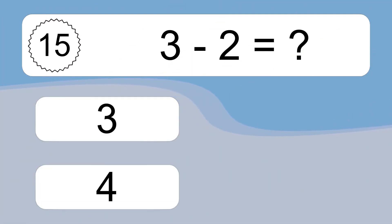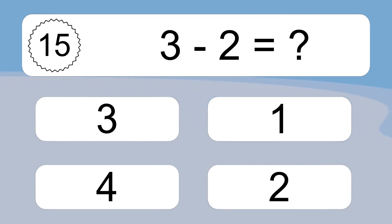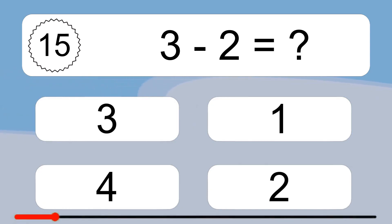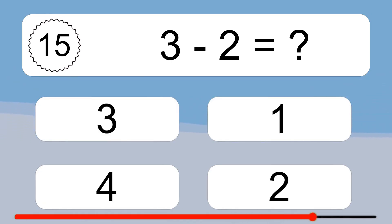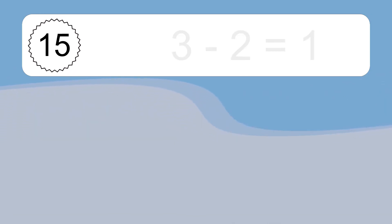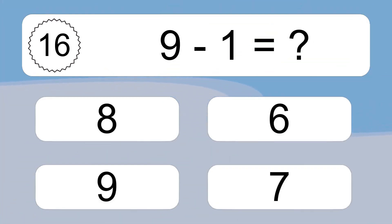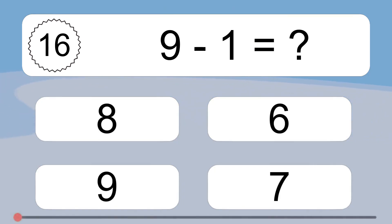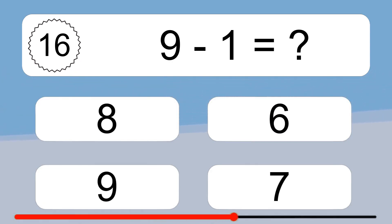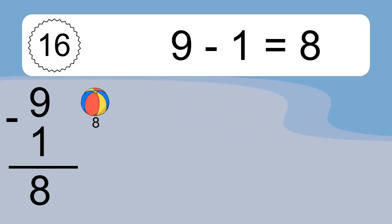3 minus 2 equals what? 3 minus 2 equals 1. Let's count it to 1. 9 minus 1 equals what? 9 minus 1 equals 8. Let's count it. 8.